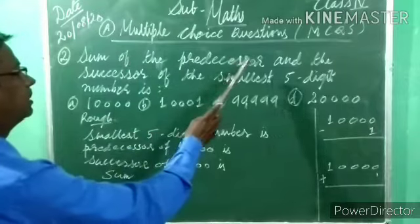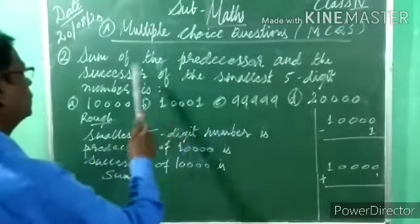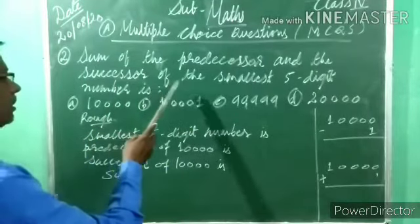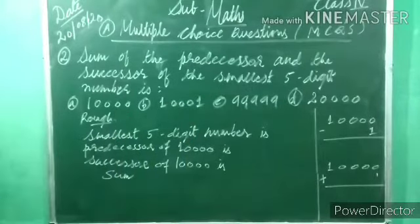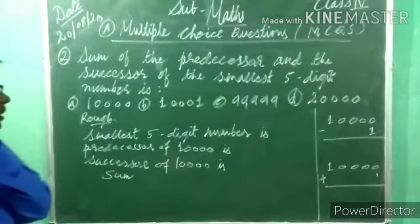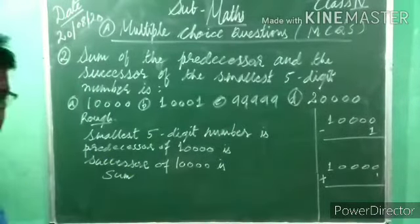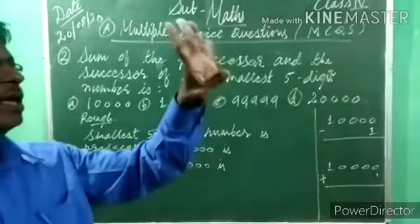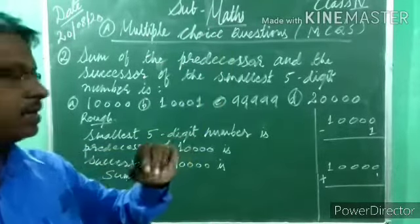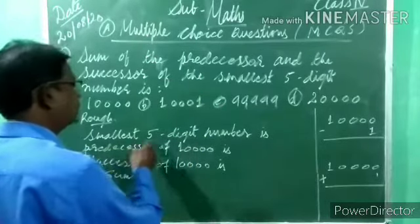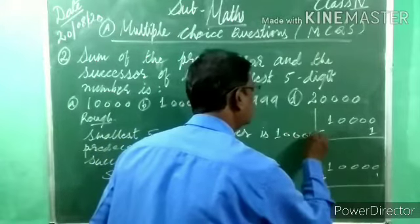Sum means plus. Predecessor means the number before — predecessor means minus one. Successor means the next number — plus one. The smallest five-digit number: put one and four zeros, so ten thousand (10,000) is the smallest five-digit number.